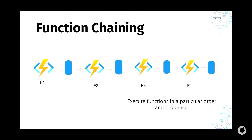Function chaining is straightforward — it's a chain of functions or activities executed in a particular order. It's useful when you have a sequence of steps that each require input from the previous function: F1 is function one, F2 is function two, passed in sequence.